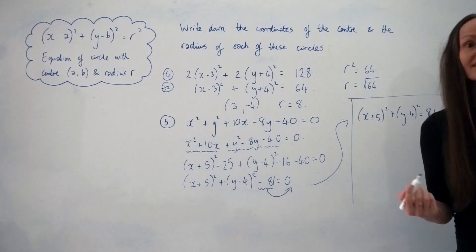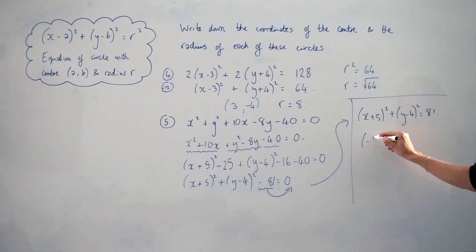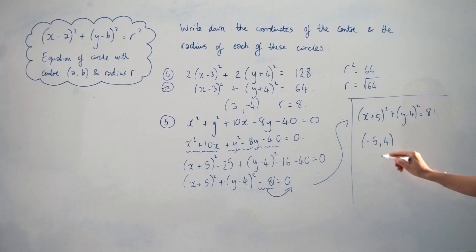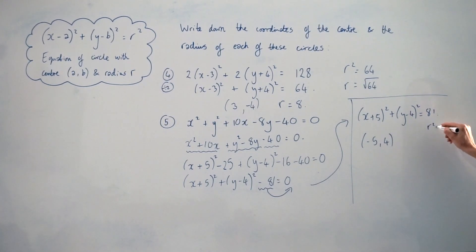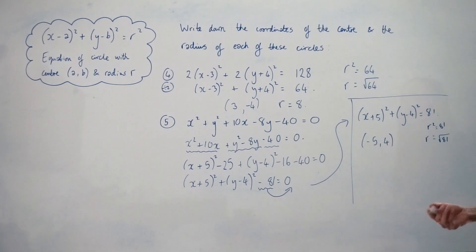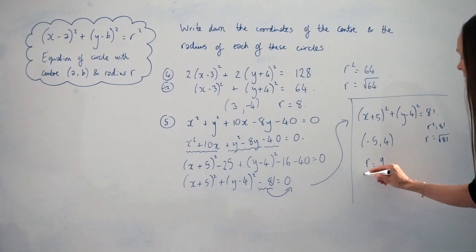Now we can see the centre of the circle is at (−5, 4) — remember, it's this number but the opposite sign. And r squared equals 81, so the radius r is the square root of 81, which is 9. So the radius of this circle is 9.